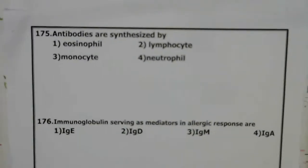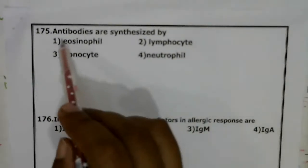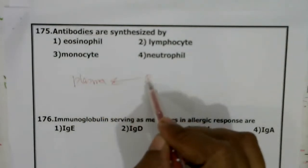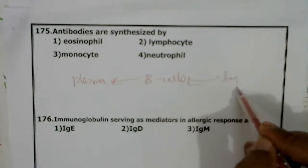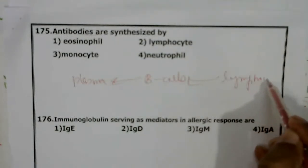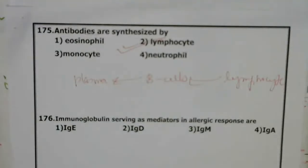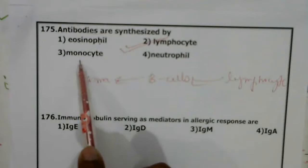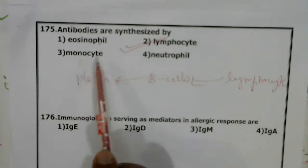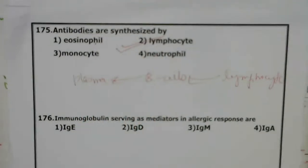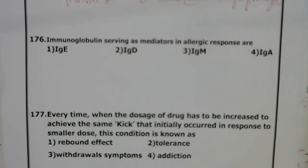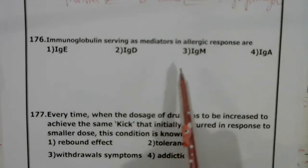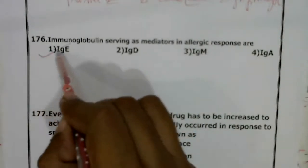Question 175: Antibodies are produced by plasma cells. Plasma cells are formed from B cells, and B cells are lymphocytes. Correct answer is 2. Eosinophils are common in allergy and worm infestations. Monocytes convert into macrophages. Neutrophils are phagocytes. When a person has allergy, the antibody IgE is elevated.